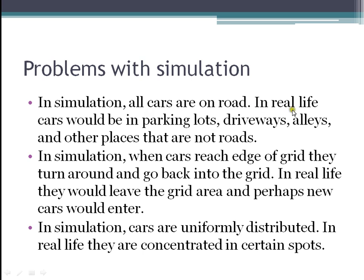Problems with the simulation: all cars are on the road instead of in parking lots and driveways. The mobility model needs to be modified because cars tend to move in zigzags, which isn't realistic — most cars travel in long, straight lines. When cars reach the edge of the grid, they turn around and go back, but they really should be dropped off and come back in as a new vehicle with a clean slate. Also, in the model, cars are uniformly distributed when in reality they'd be concentrated at stoplights and main roads. It's not a very accurate simulation, but it's the first step.